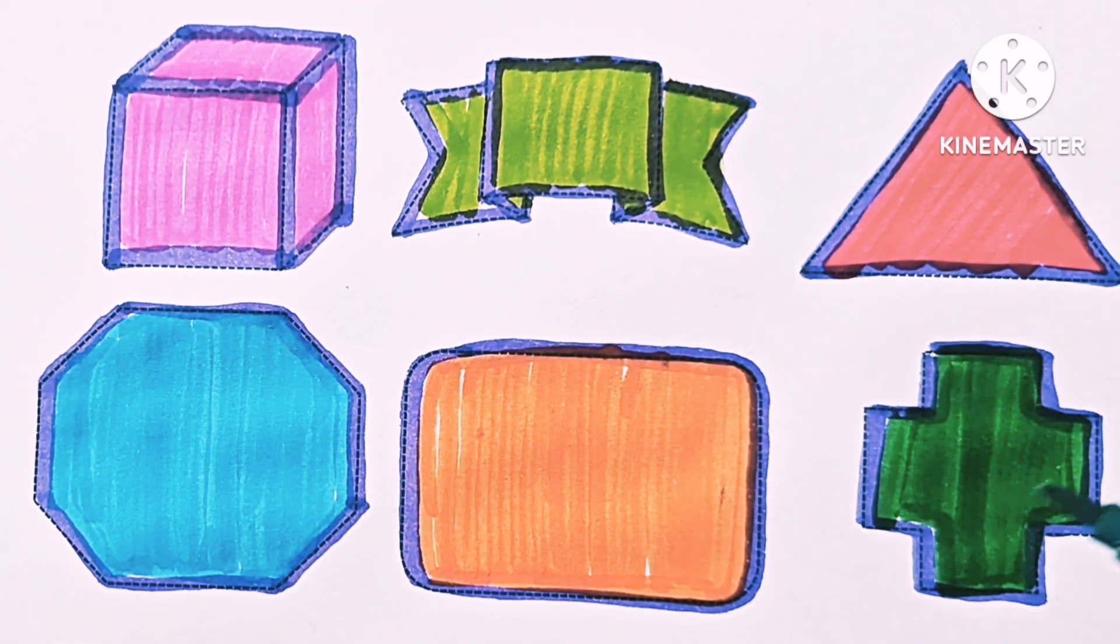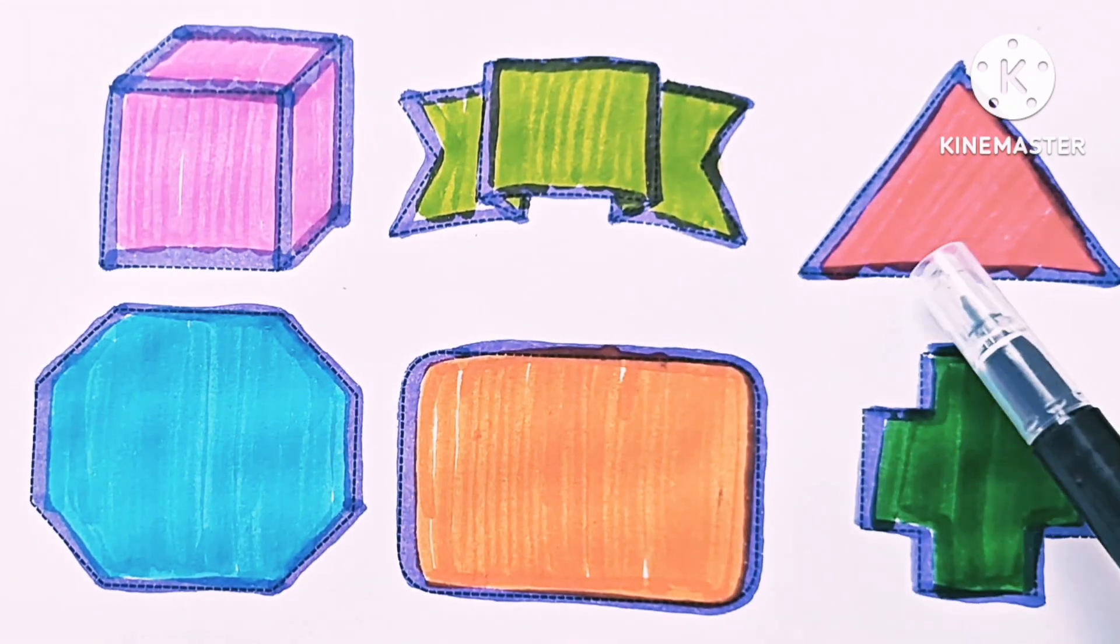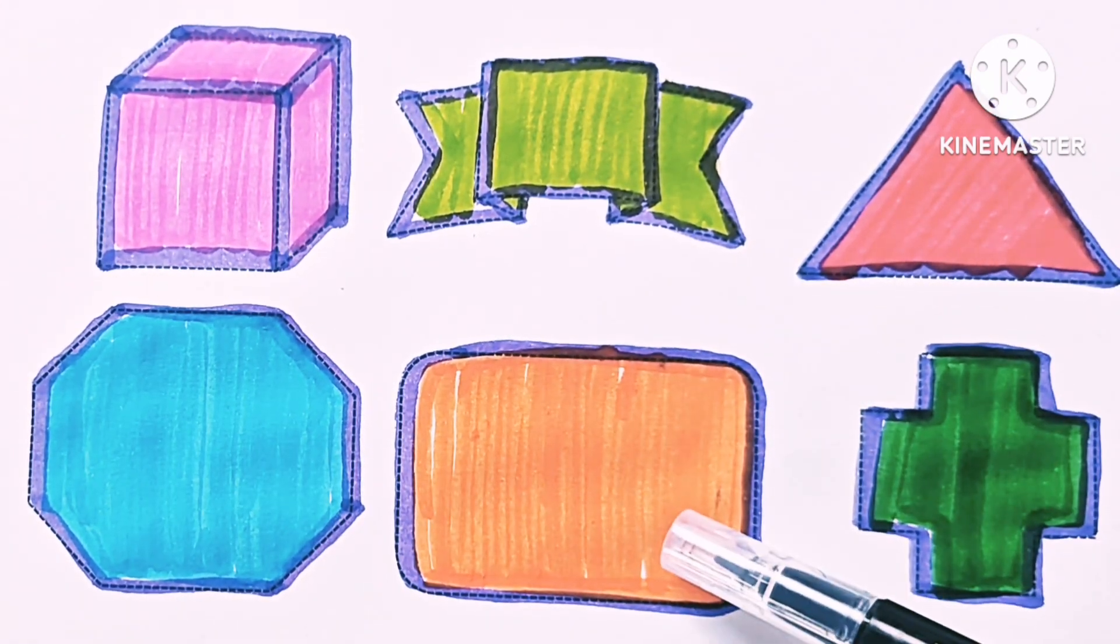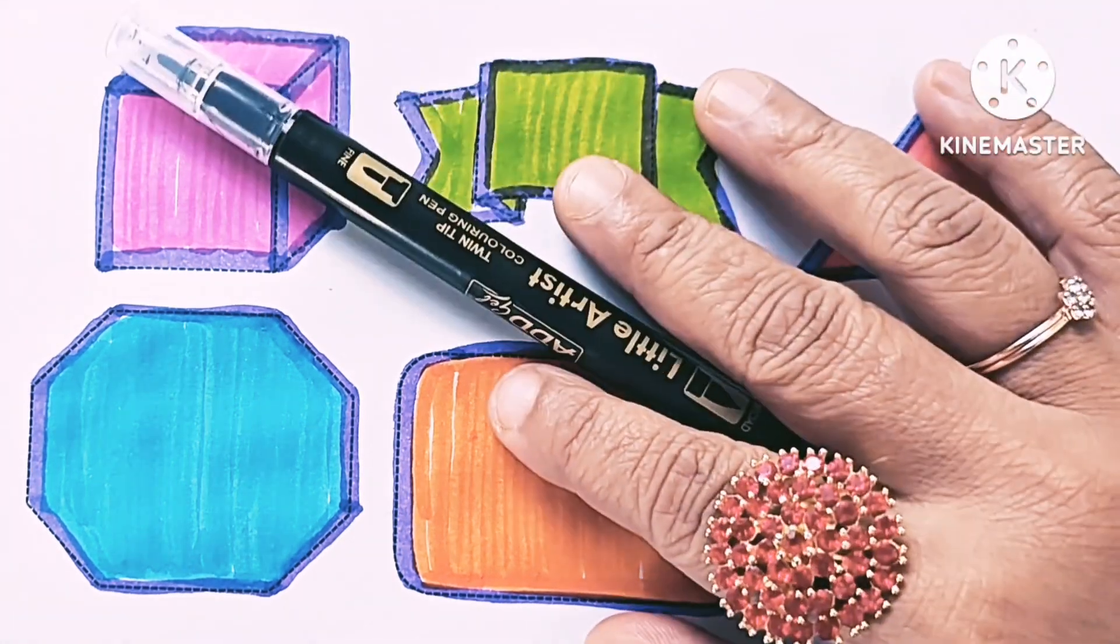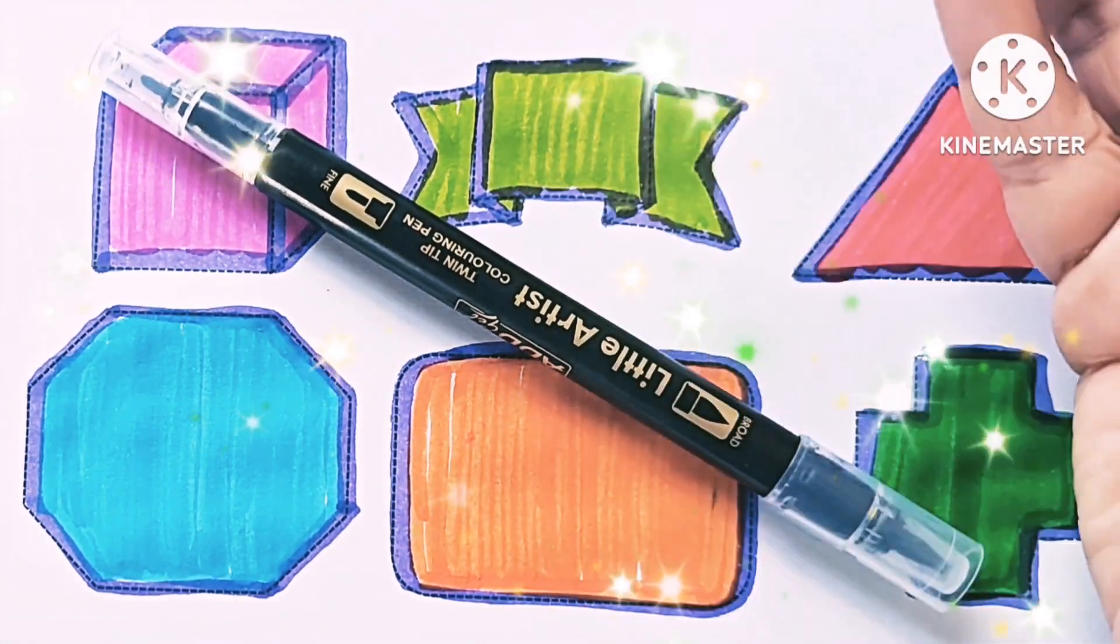Cross. Cube, ribbon, triangle, octagon, rounded rectangle, cross. Thanks for watching this video, don't forget to subscribe and like. See you in next video, bye bye.